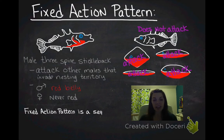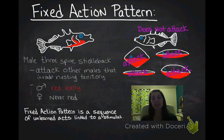In a fixed action pattern, there's a sequence of unlearned acts that are linked to a stimulus. In this case, the stimulus is the red. And the sequence of unlearned acts is the attack behavior.